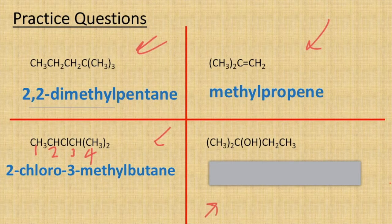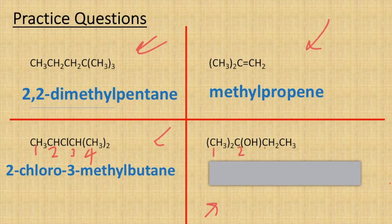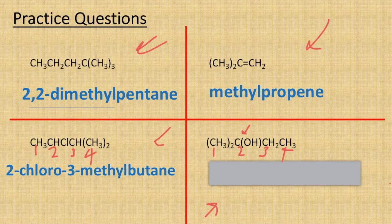Our final molecule for this page is an alcohol. Again we'll look at the longest carbon chain, and it's going to be one, two, three, four — so again it's a butane stem — and it's going to be butan-2-ol because the OH is coming off that second carbon.